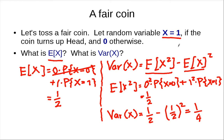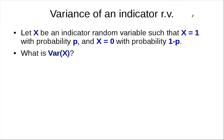Now let's look at a general case. Suppose we have an indicator random variable such that x equals 1 with probability p. Previously we had p equal to 1/2. What is the variance of x? I'll wait a few seconds so you can think about it. If you haven't finished your calculation, you can go back and look at the previous coin toss exercise and try to apply the same approach.